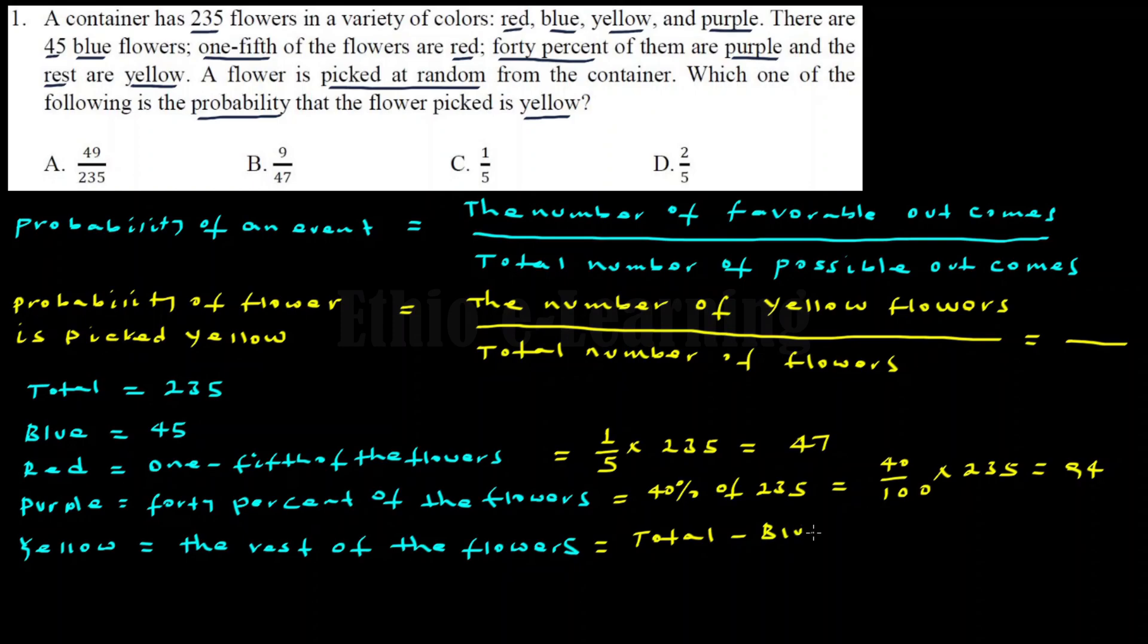Blue flowers plus red flowers plus purple flowers plus yellow flowers equals the total flowers, 235. Blue flowers: 45. Red flowers: 47. Purple flowers: 94.